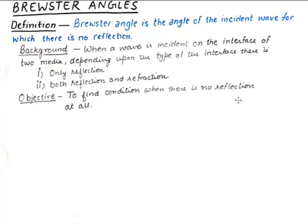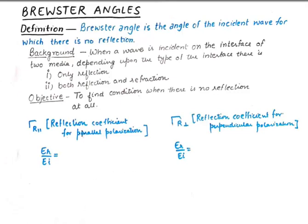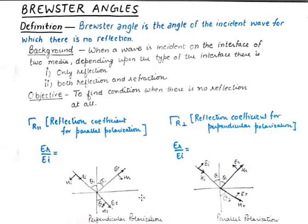Our objective will be to find the condition when there is no reflection at all, and we will find those conditions for two different cases: one will be for horizontal polarization and the other one will be for vertical polarization. For parallel polarization we should know the reflection coefficient — the value of Er upon Ei. We should also know the reflection coefficient for perpendicular polarization. Note: these are incorrectly drawn under the headings on the board — please correct that while noting it down. You can simply judge the polarization from the orientation of the incident wave.